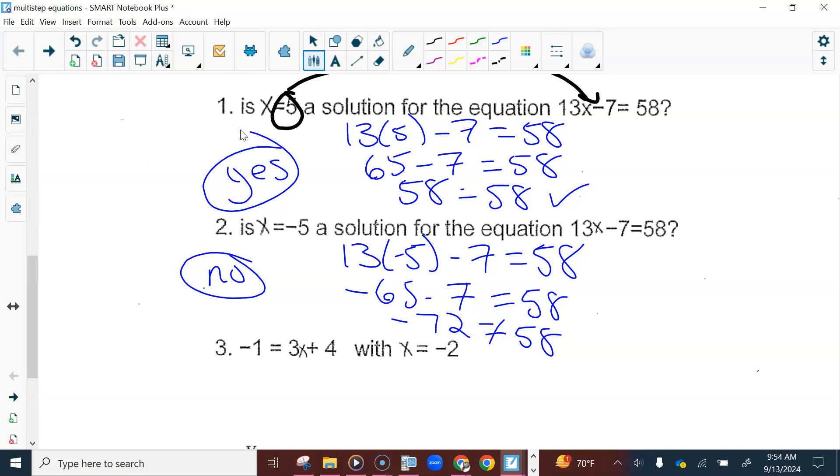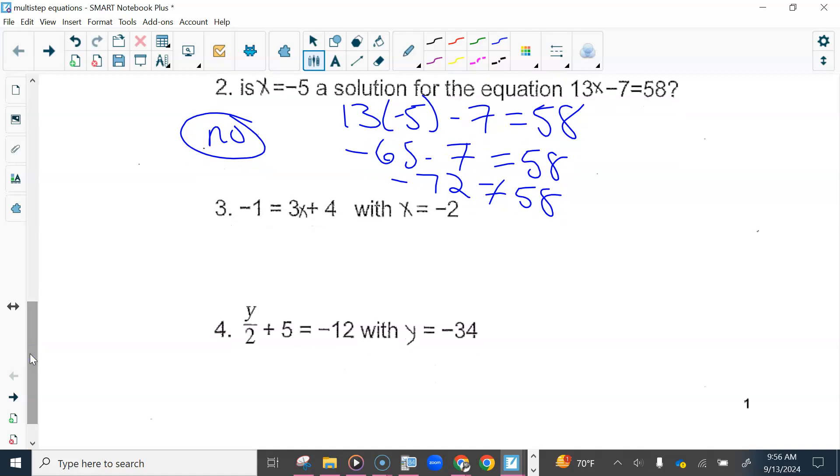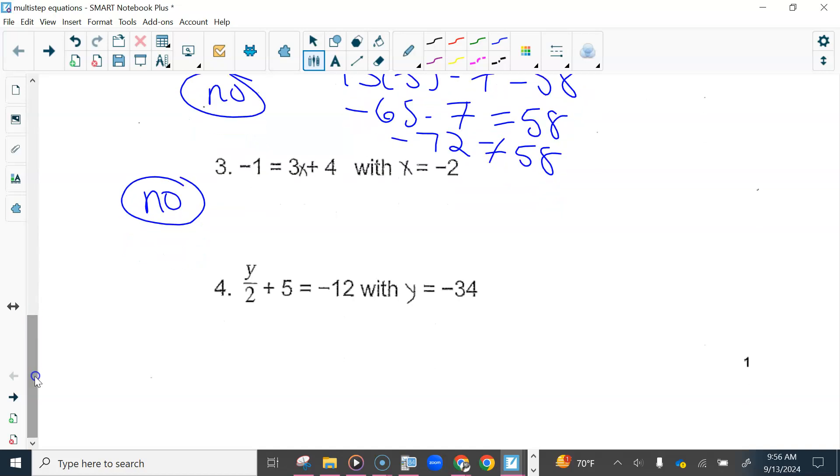So this is a great way to double check yourself when we get into solving more complex things to see did you get the correct answer or not. Try number 3 and number 4. Was 3 a solution? No. Does anyone need to see that? What about number 4? Yes. Does anyone need to see that one?